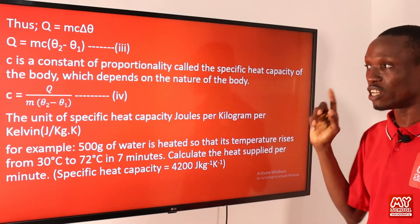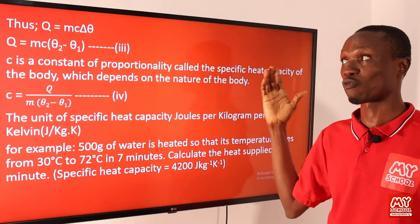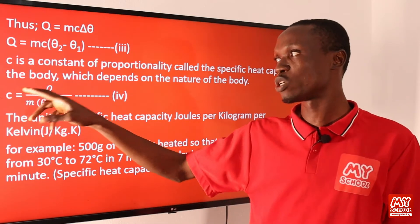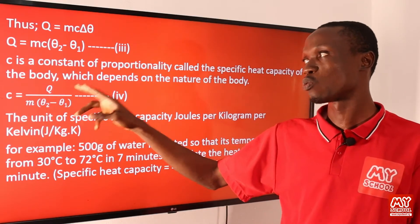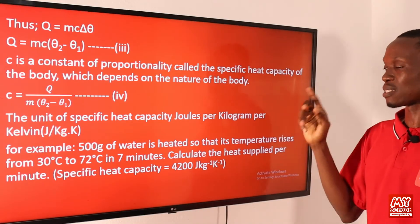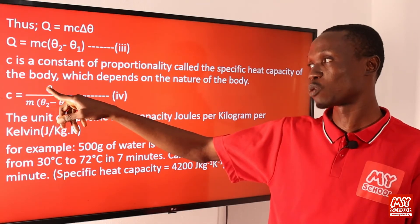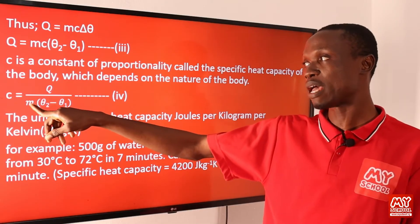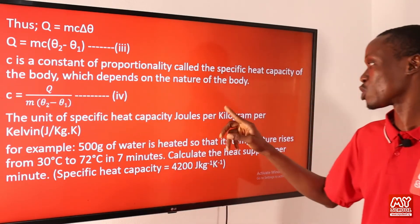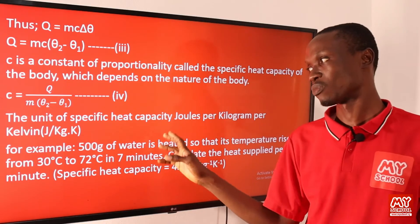From Q = mcΔθ, we can make c the subject of the formula by dividing both sides by m and Δθ, so that c = Q divided by (m × Δθ). The unit of specific heat capacity is joules per kilogram per kelvin, because Q is in joules, m is in kilograms, and temperature is in kelvin, and since they are dividing, the unit becomes J/kg/K.